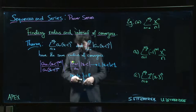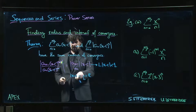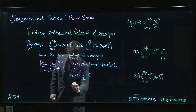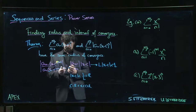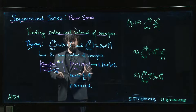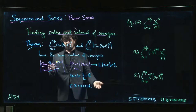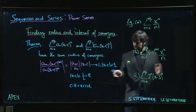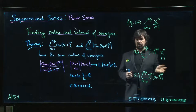The inequality |x minus c| < R is exactly the same as saying c minus R < x < c plus R — there's your interval. But the ratio test isn't going to tell you what happens at the endpoints; you have to check those separately. Often at one of the endpoints you've got an alternating series, so the alternating series test applies. Sometimes you get absolute convergence at both ends, but sometimes only one end or neither. Let's look at some examples.